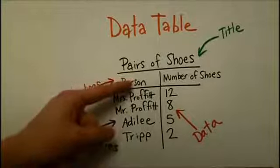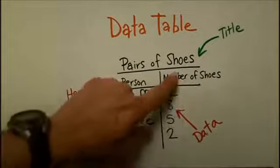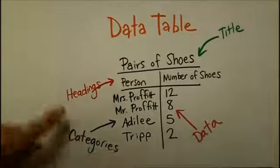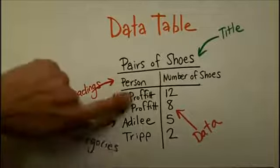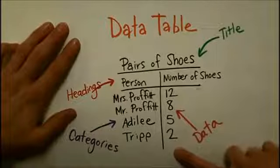On this column, we're going to have the person whose shoes were counted. And in this column, we're going to have the number of shoes. We have here, these are the categories. Myself, Mr. Profit, Adley, and Tripp. And on this side, we have the data that was collected.